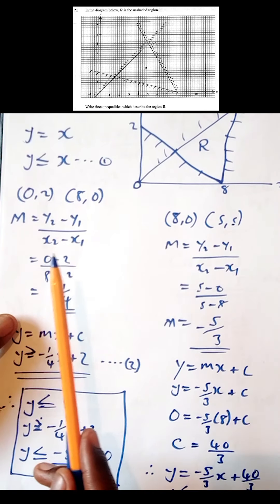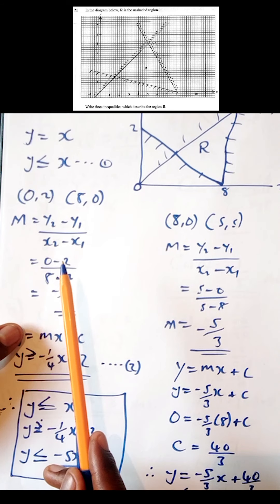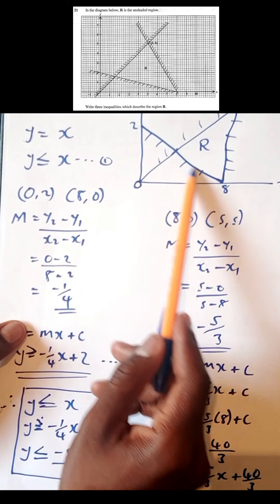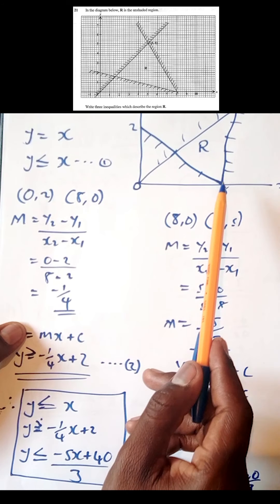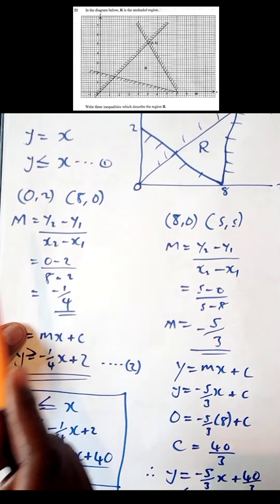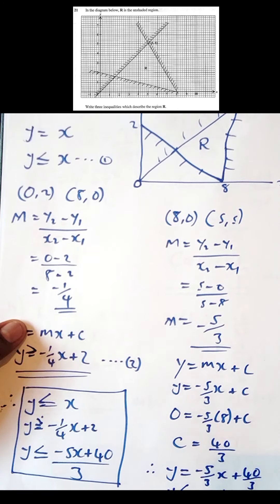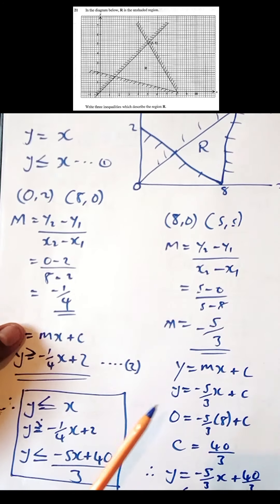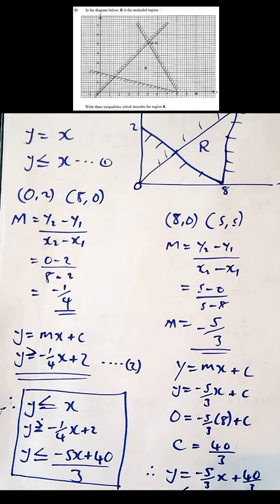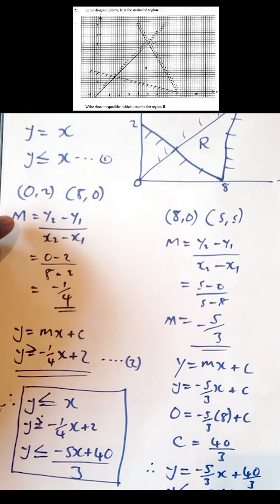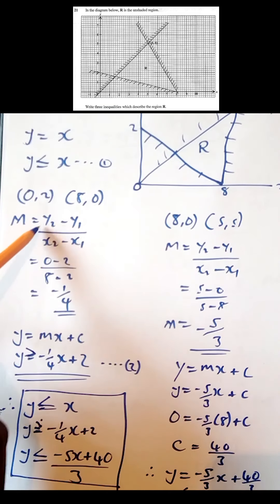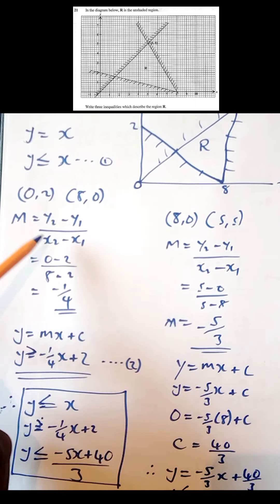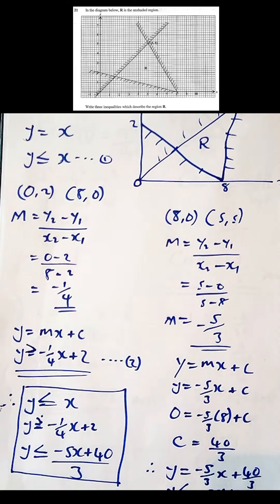We come to the other line, which has coordinates (0, 2) and (8, 0). To find the inequality for this line, we must first find its equation, and to do that we need to find the gradient using the formula: gradient = (y2 - y1) / (x2 - x1).